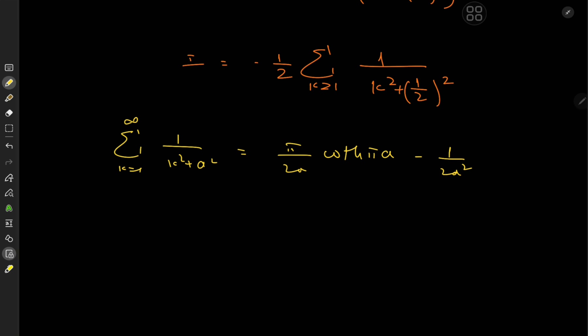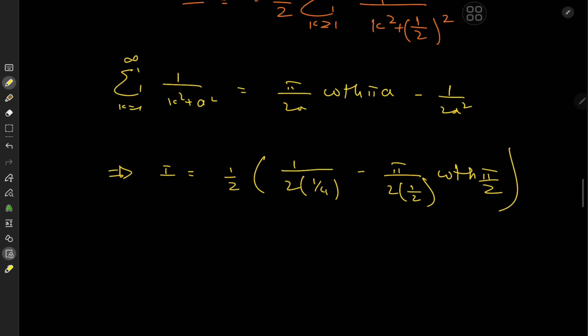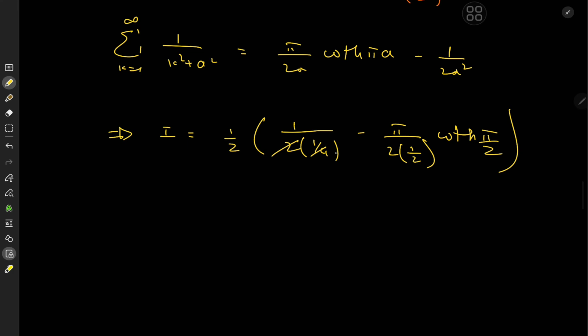So in our case we just have a equal to 1 half, so this implies that I equals negative 1 half times, well the negative sign means I can switch up the order of the difference here. So we have 1 over 2 times a quarter minus π over 2 times 1 half times hyperbolic cotangent of π over 2. So we do have some cancellation here. All of this implies that I is simply 1 minus π over 2 times the hyperbolic cotangent of π over 2 which looks dope.